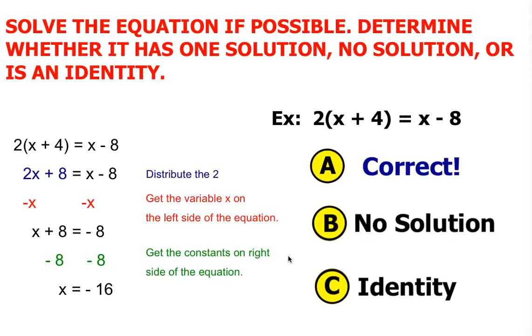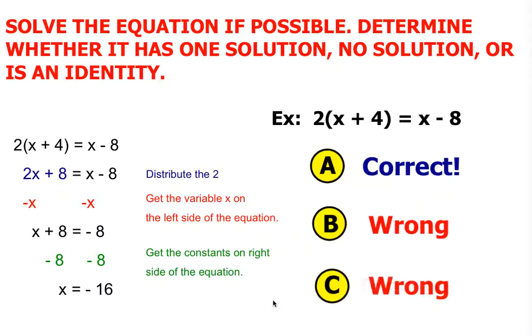And if you did not solve this correctly and maybe you thought it was B, you would have seen this. If you would have chosen C, you would have seen that as well. I hope that helped. Thanks!